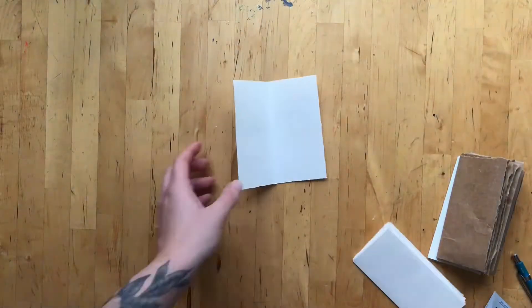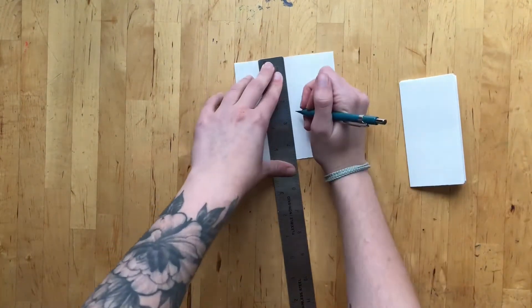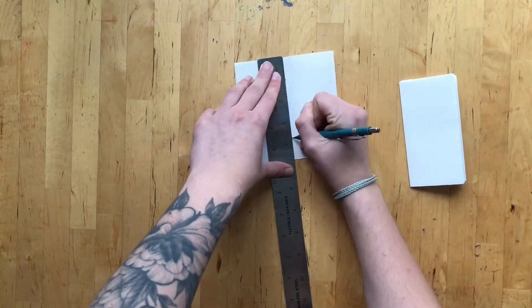Next, make holes in your signatures. To do this, take one page, open it up, and measure three holes evenly spaced on the spine with the ruler. This is where we will sew the pages onto the cover.